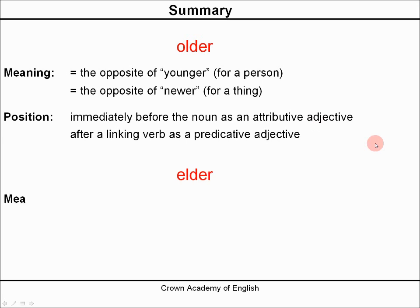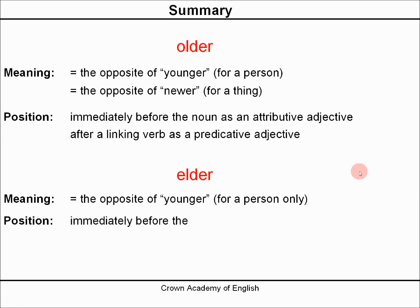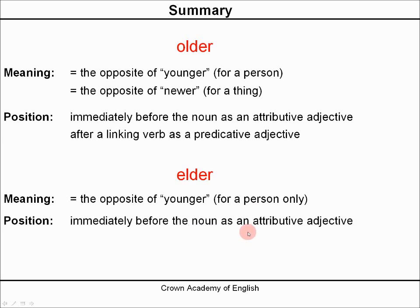But elder is more strict. With elder, the meaning is the opposite of younger and we only use it to describe a person or people. And the position — we only have one possible position, immediately before the noun as an attributive adjective.